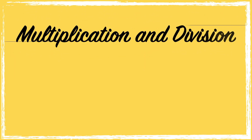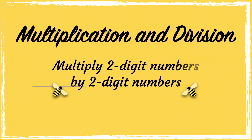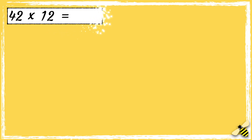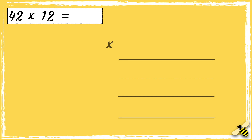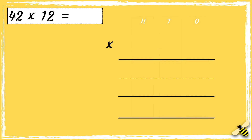In this video we're going to be multiplying two-digit numbers by two-digit numbers using long multiplication. Here is the number sentence: 42 times 12. It's really important to line the numbers up correctly, so we have the hundreds, the tens, and the ones. 42 has four tens and two ones; 12 has one ten and two ones.